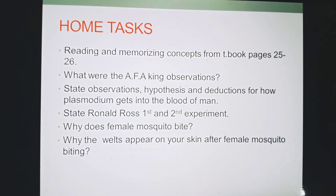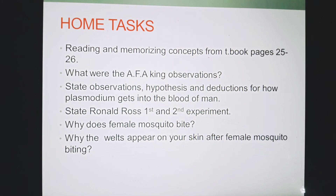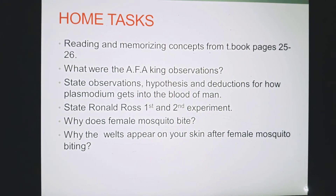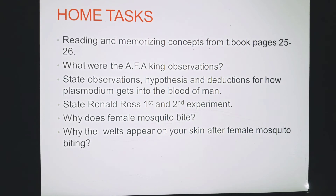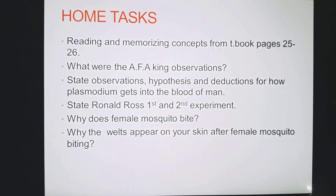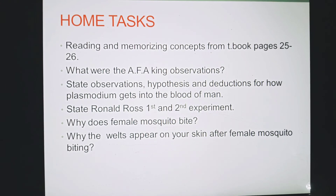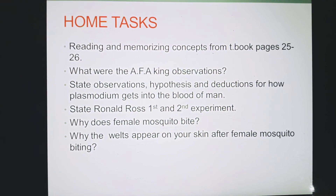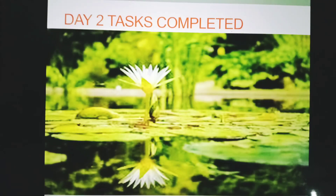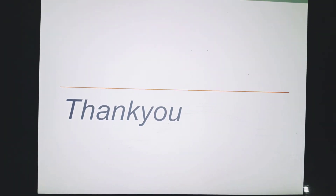Now it's time to discuss the home tasks for day 2: reading and memorizing concepts from textbook pages 25 to 26. What were the AFA King observations? State observations, hypothesis, and deductions for how plasmodium gets into the blood of man. State Ronald Ross's 1st and 2nd experiment. Why does the female mosquito bite? Why do welts appear on your skin after a female mosquito bite? Day 2 tasks completed. Alhamdulillah. Thank you and have a nice day.